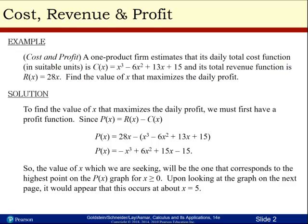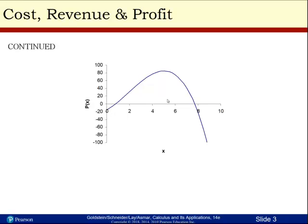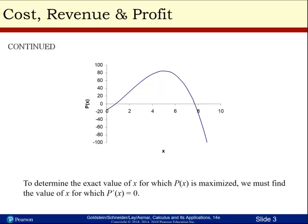The value of x we are seeking will be the one that corresponds to the highest point on the p of x graph for x greater than 0. Looking at the graph on the next page, it appears that our maximum occurs somewhere around 5. To determine the exact value of x for which p is maximized, we're going to find the value of x for which the derivative of profit equals 0.